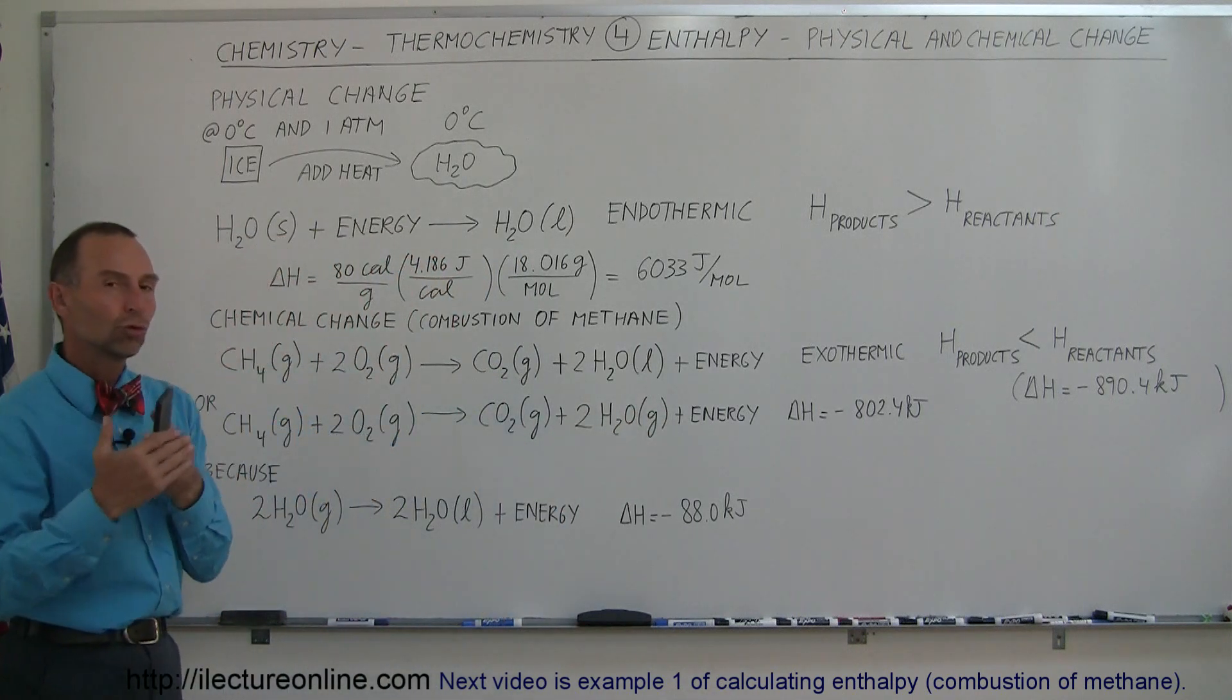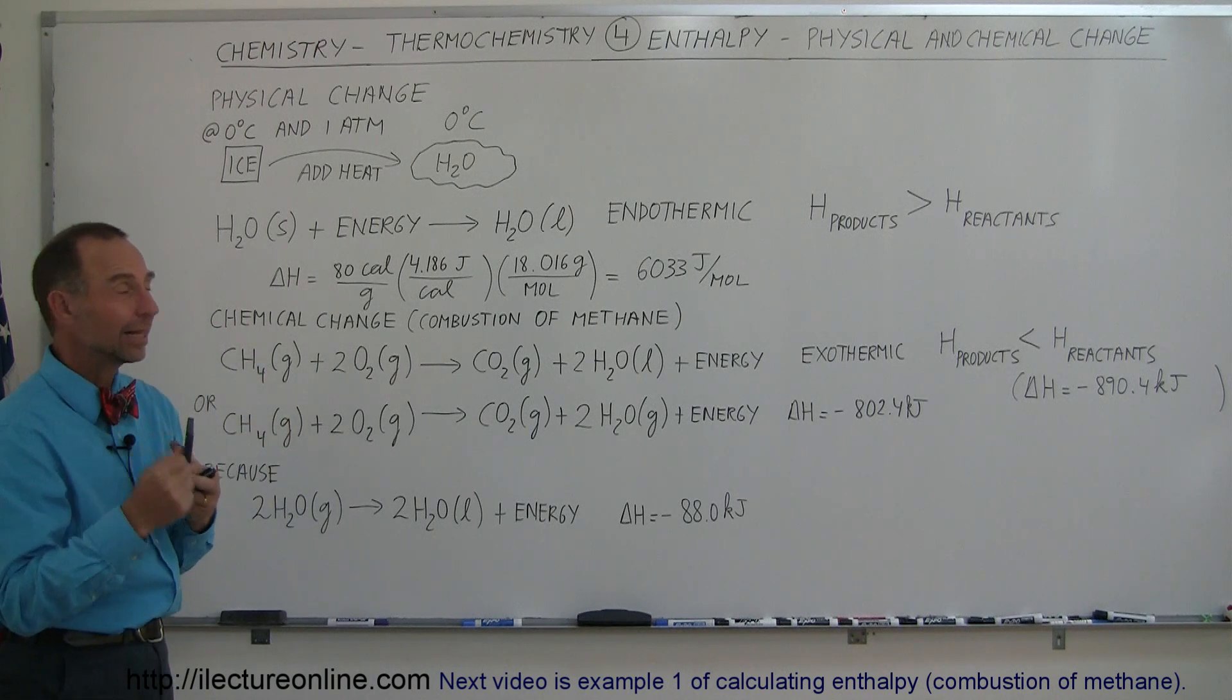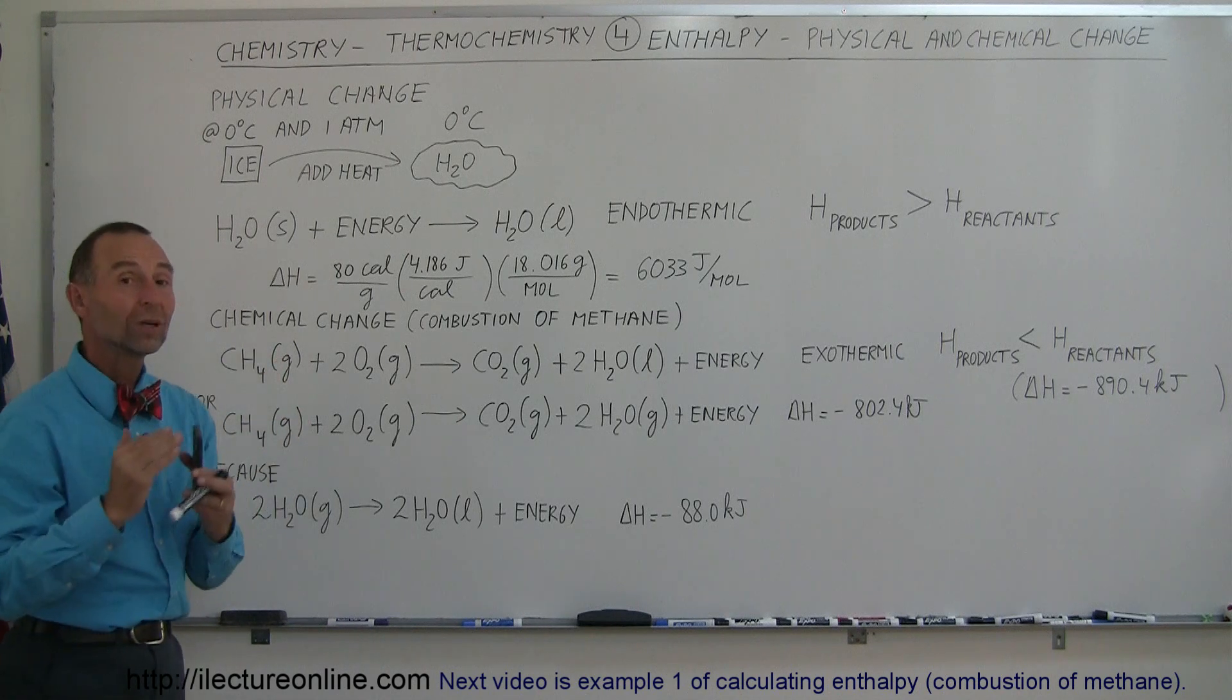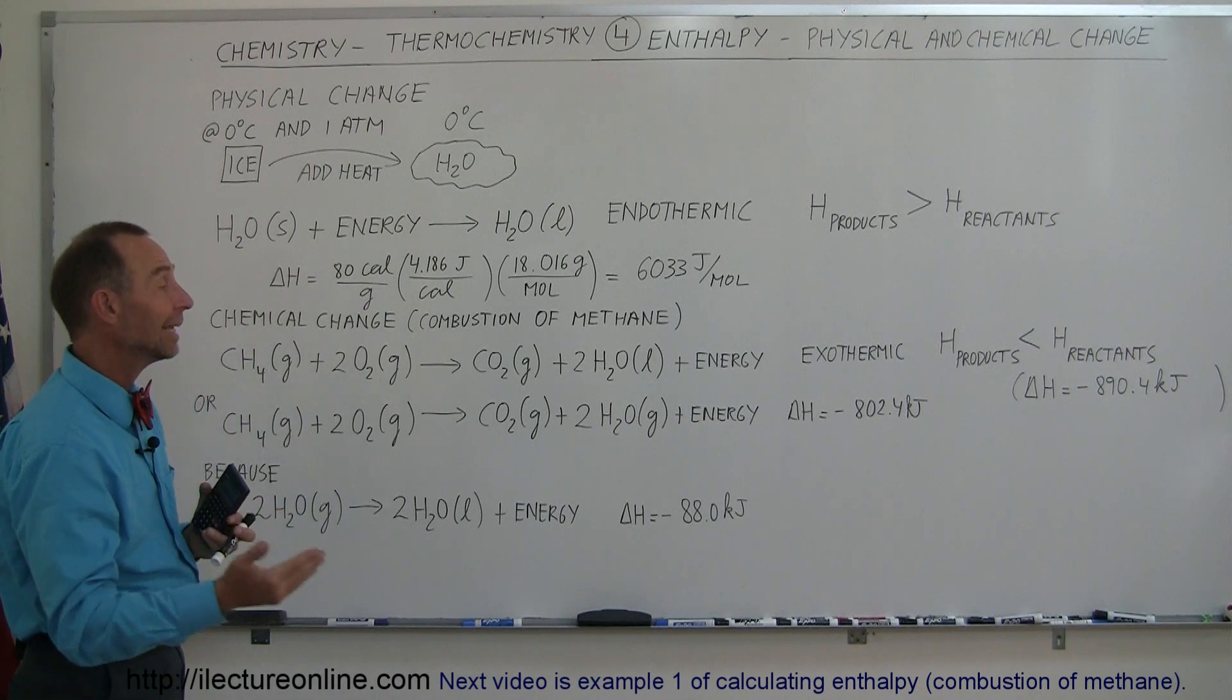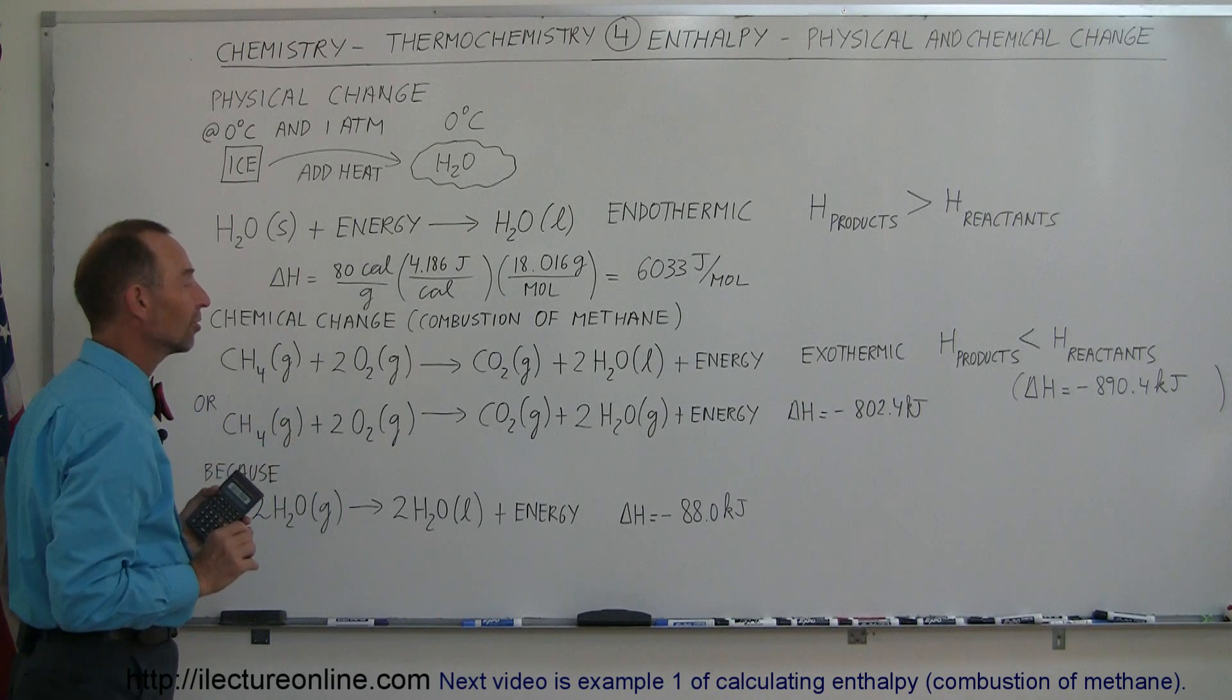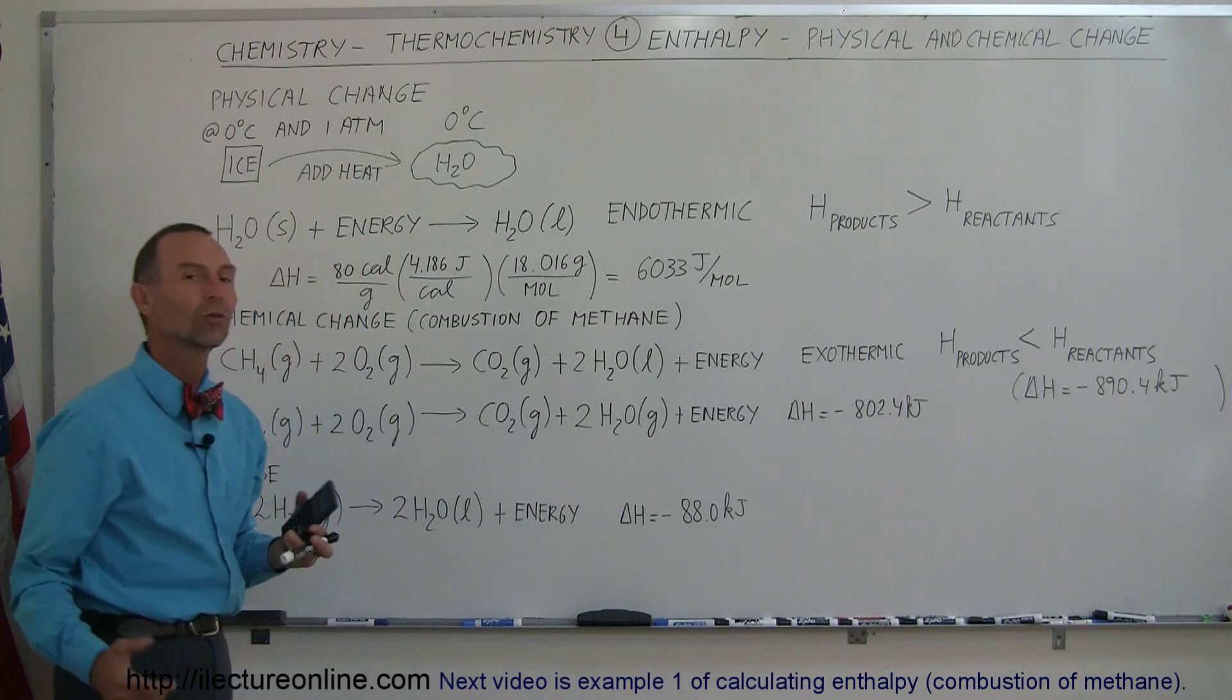Now however, to get the true number, the true number for the change in enthalpy, if we calculate it, the reaction must be done at one atmosphere and at 25 degrees centigrade, which means that we start off with the product at 25 degrees centigrade and we want the reactants to be at 25 degrees centigrade as well.